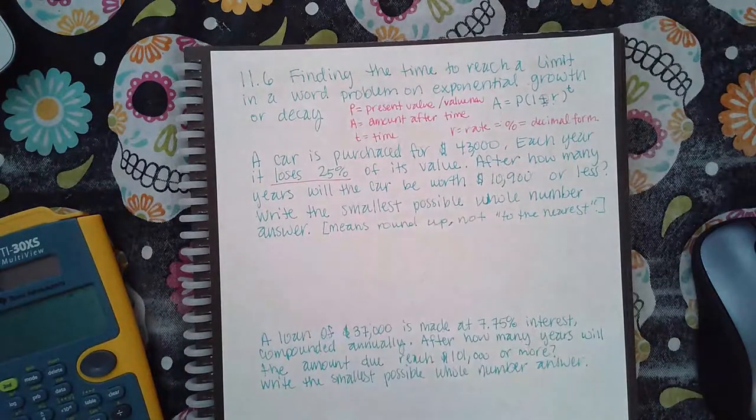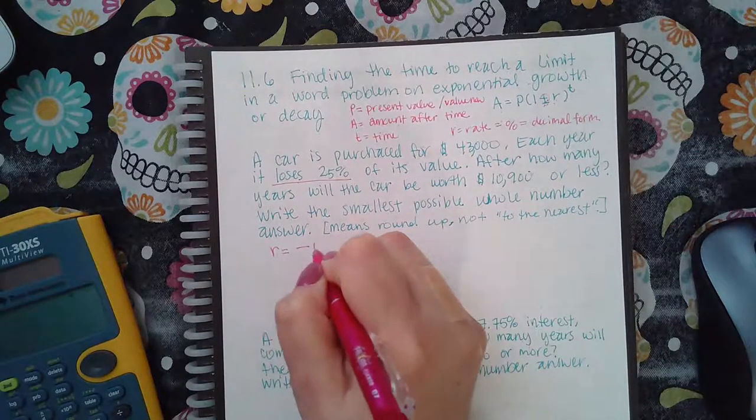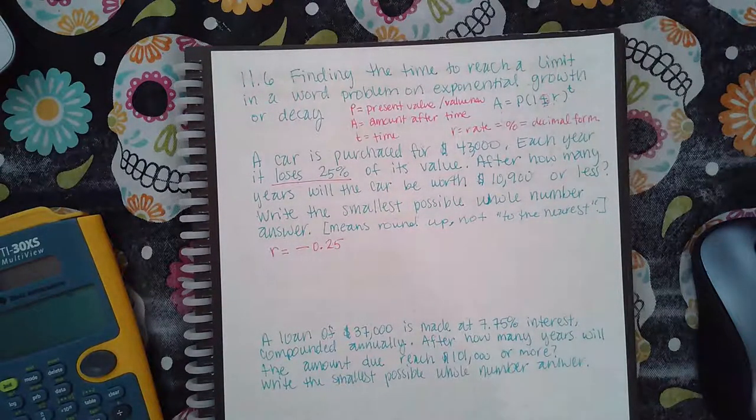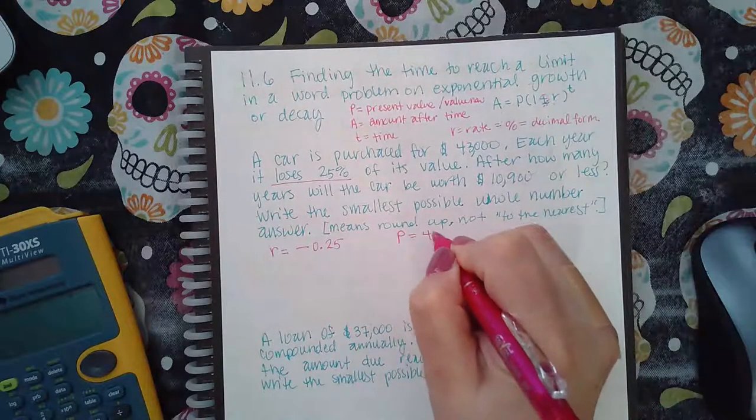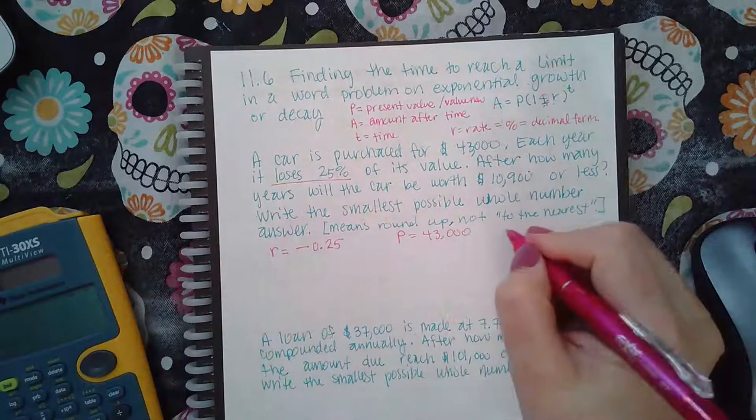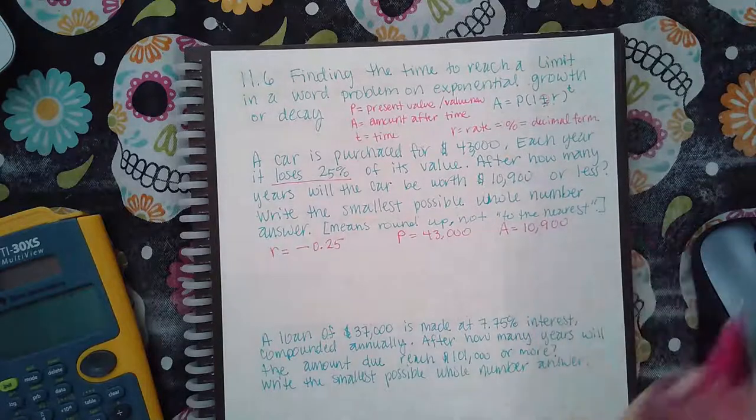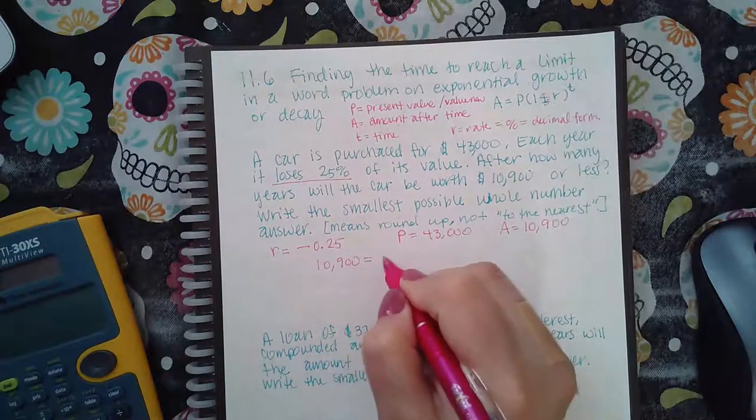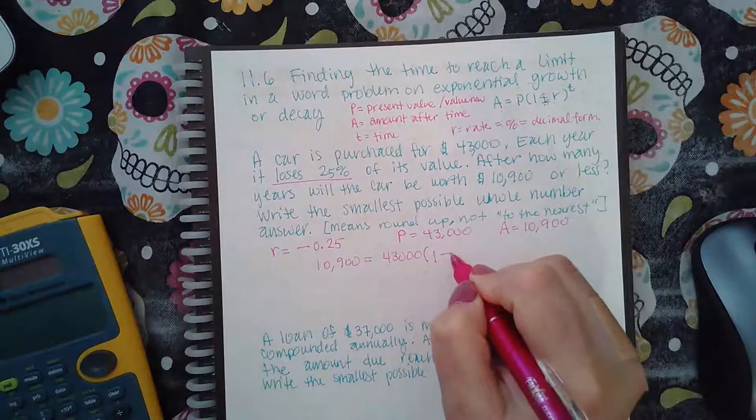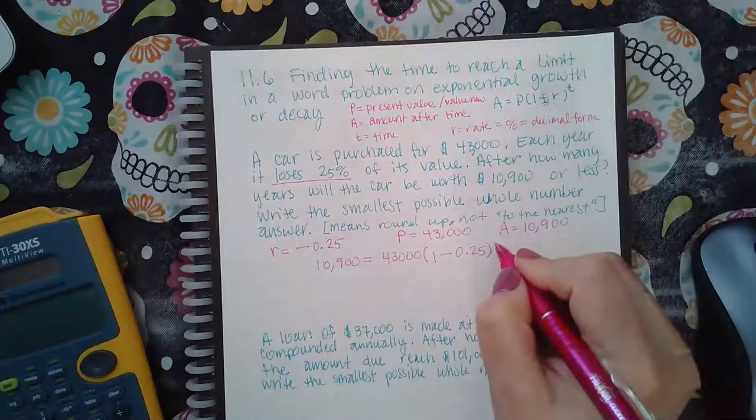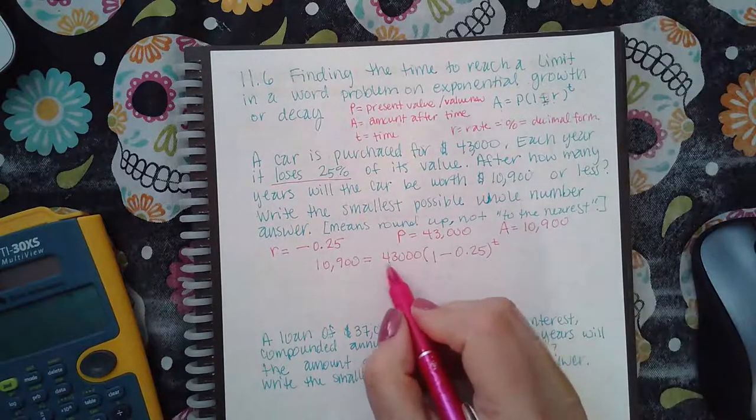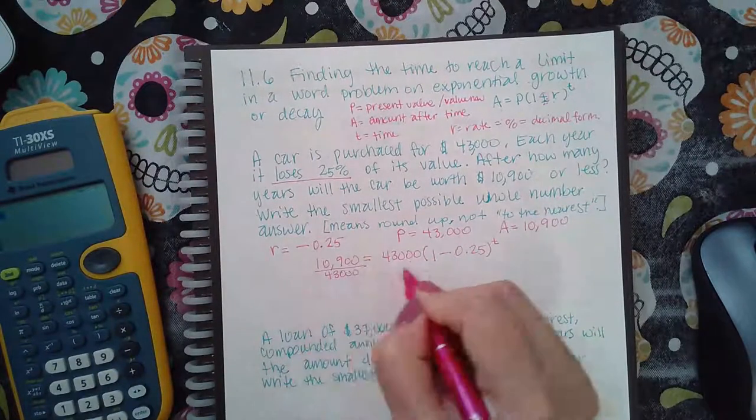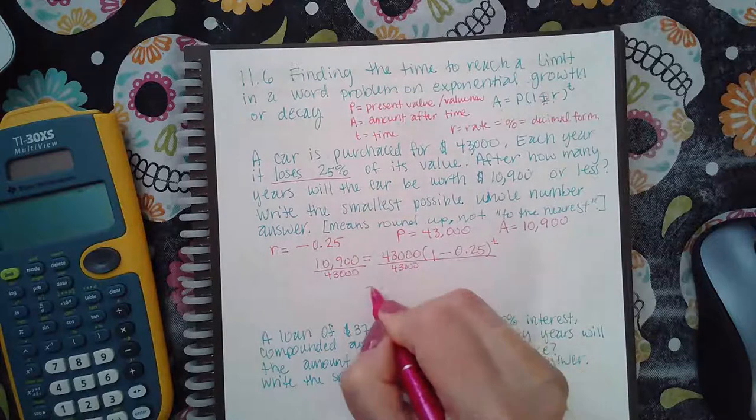Right here, it says loses 25%, which means my rate is actually going to be a negative 0.25. That's that percentage as a decimal. I know that right now, the car costs $43,000, but after so many years, it's going to be valued at $10,900. And so I'm going to plug everybody into the formula. So A equals P, 1 minus 0.25, because it's negative, and then raised to the power T. And so then how do I solve this? The first thing I got to do is divide by the 43,000.